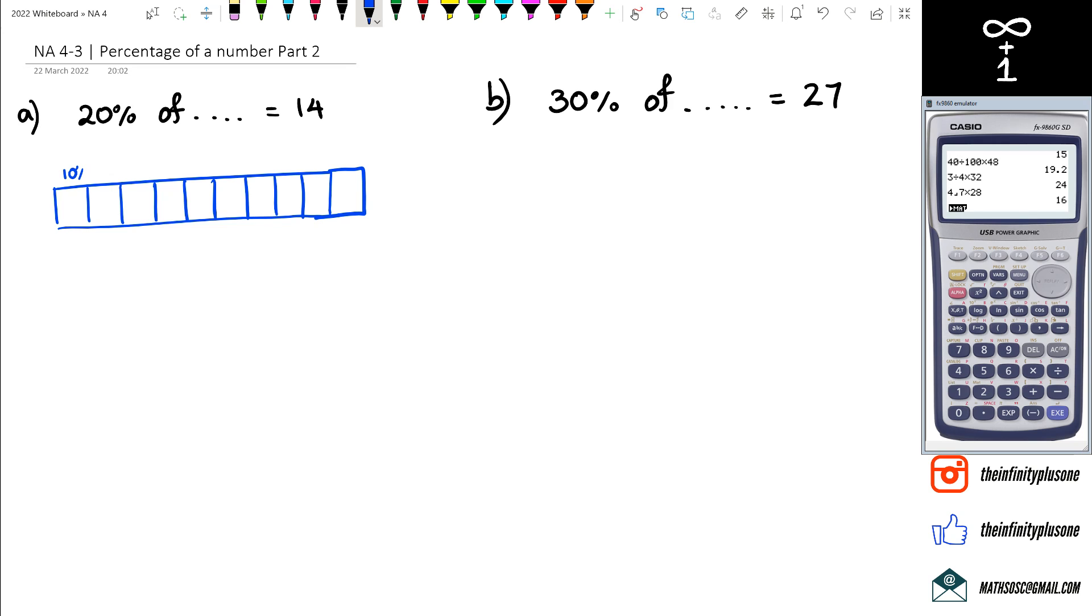So that's 10% right there and this is 20%. Now what it says is this 20%, 20%, 20% is actually equal to 14. So this little green box, the whole green box, is actually equal to 14. That's what it actually means.